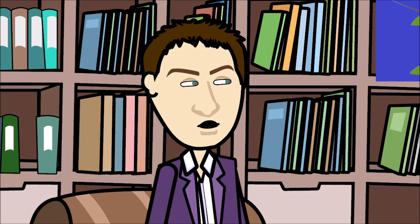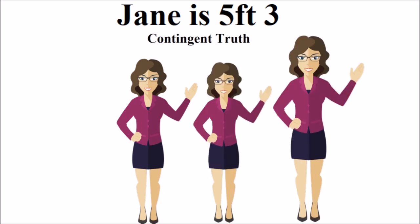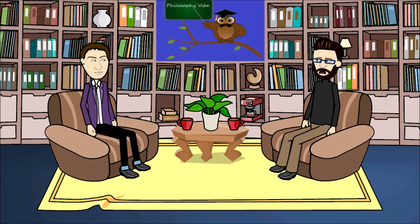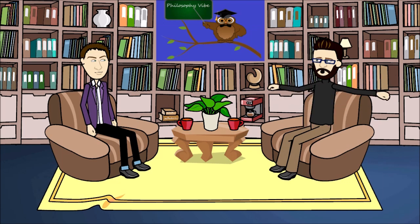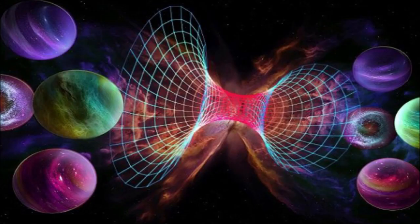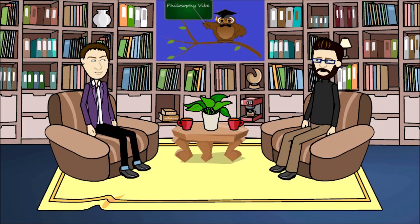Correct. But saying 'Jane is 5 foot 3' is a contingent truth. Even though Jane is 5 foot 3, she could have been 5 foot 2, or 6 feet tall, or whatever — her height could have been different. Another way to look at it is to think of possible worlds. Philosophers use possible worlds almost like alternate realities to look at how things could have been. If there is a truth that has to exist in all possible worlds, then this would be a necessary truth. So, you cannot think of a possible world where 2 plus 2 does not equal 4 — every possible world you think of, no matter how different, the logic of numbers will obtain, so this becomes a necessary truth.